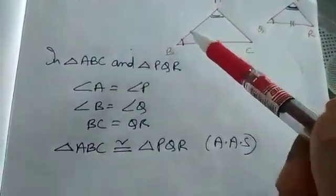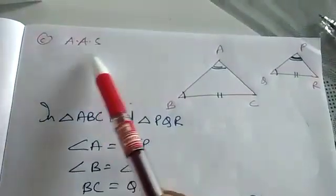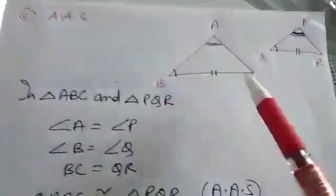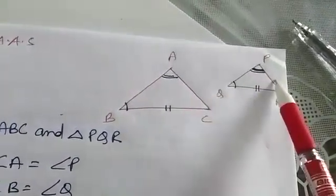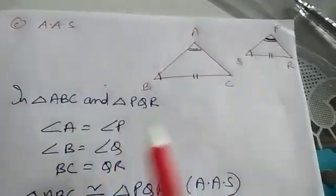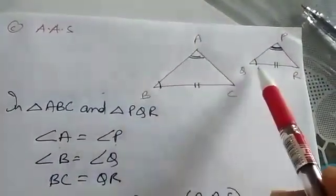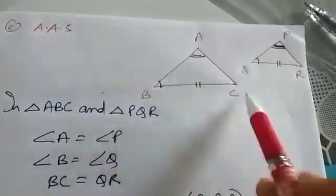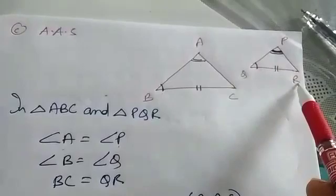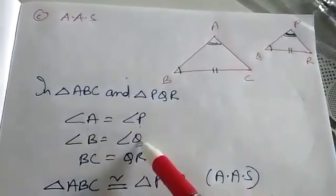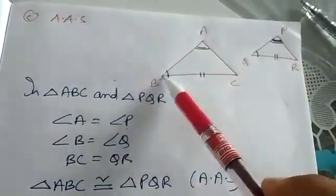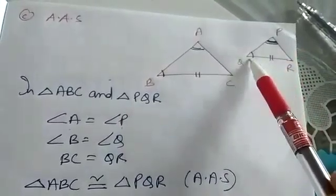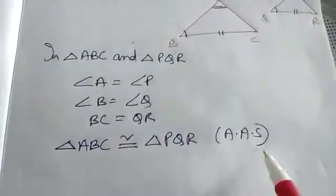These two triangles can also be congruent by another process given in your book: Angle-Angle-Side (AAS) — two angles and one side that is not in between them. Angle A equals angle P, angle B equals angle Q, and side BC equals QR. So triangle ABC is congruent to triangle PQR by Angle-Angle-Side.